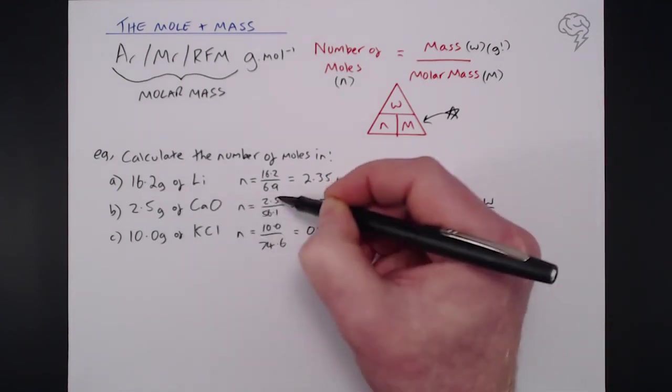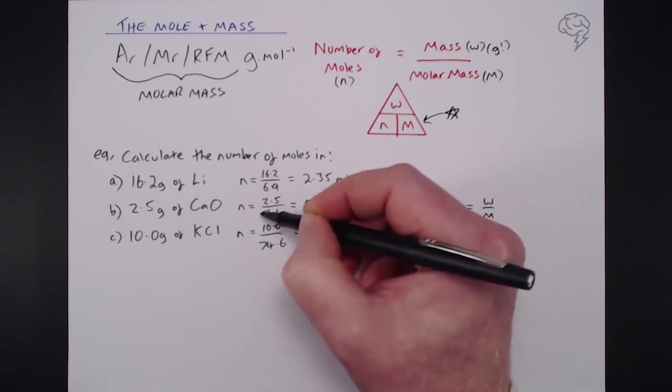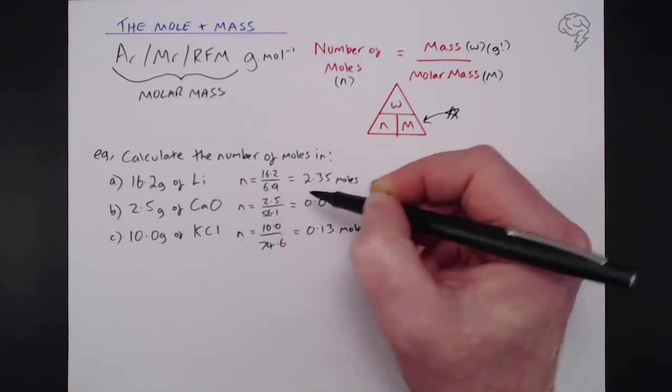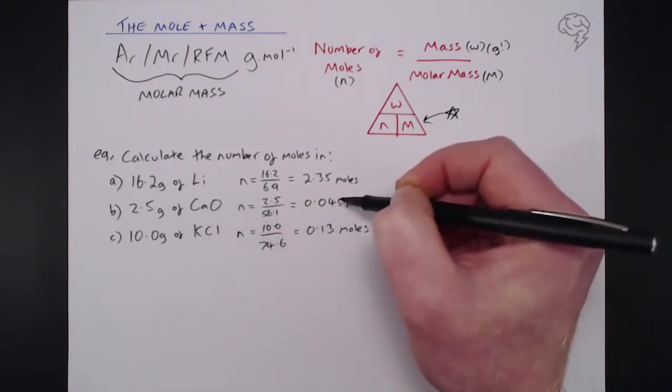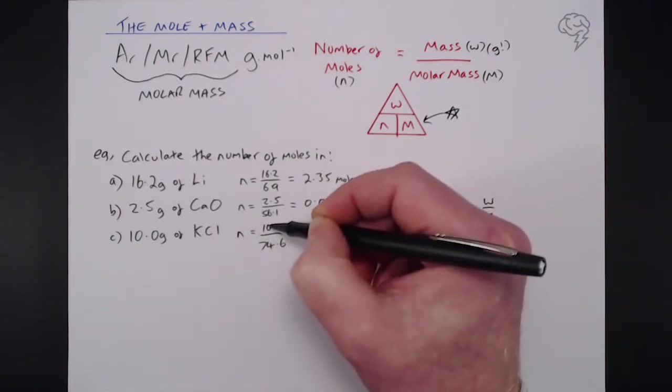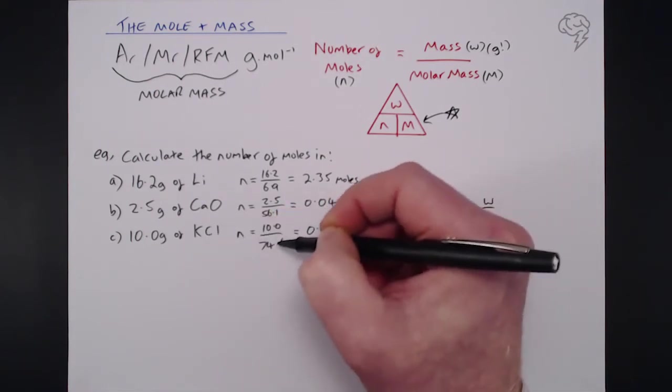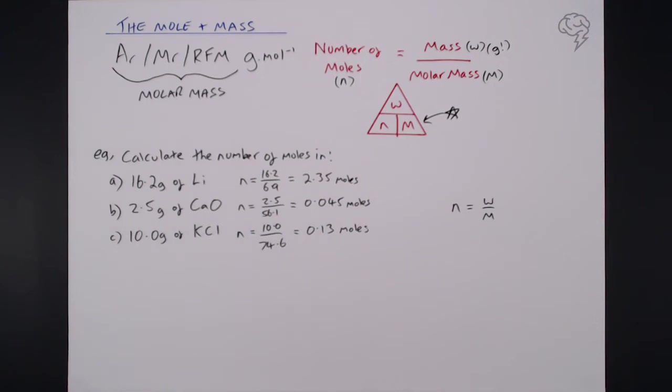Likewise for calcium oxide we've got 2.5 grams divided by the MR or the relative formula mass of calcium oxide here which is one calcium and one oxygen which gives us 0.045, and 10 is the mass in this one and the relative formula mass of potassium chloride is 74.6 and that gives us 0.13 moles.